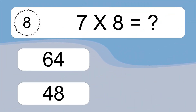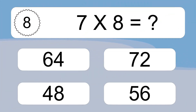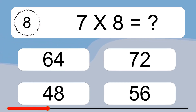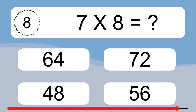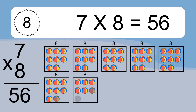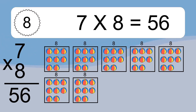7 times 8 equals what? We have 7 boxes, and each box has 8 colorful balls inside. If you count all the balls in all the boxes together, you will have 7 times 8 balls. This equals 56 balls.